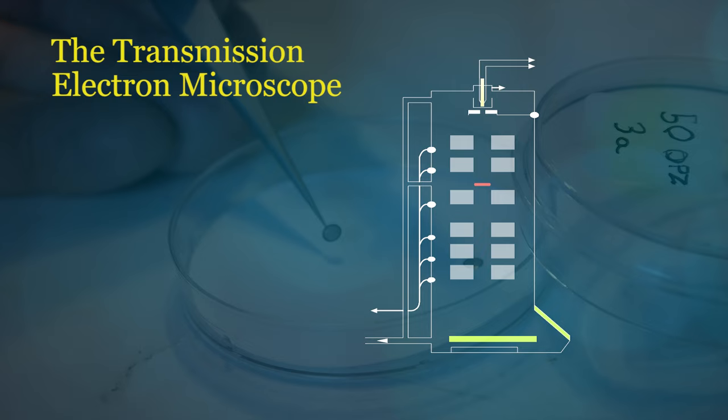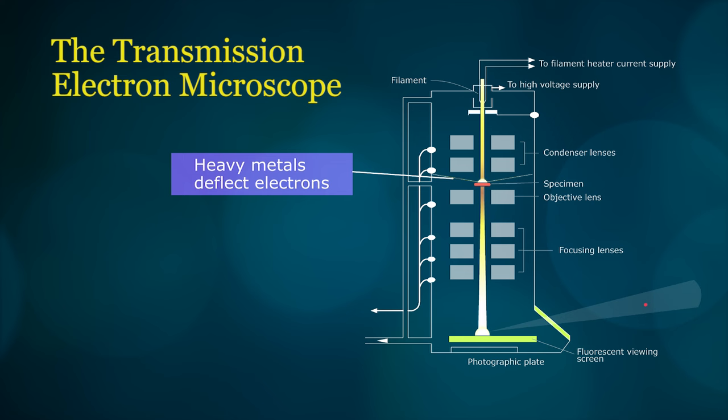The final step in tissue preparation is staining. Contrast in electron microscopy is enhanced using heavy metals, for example uranium and lead.